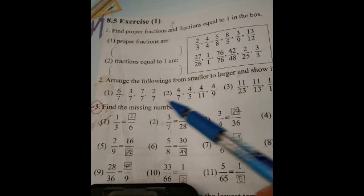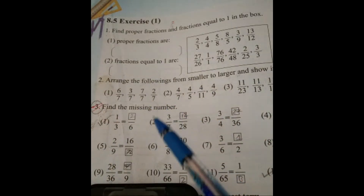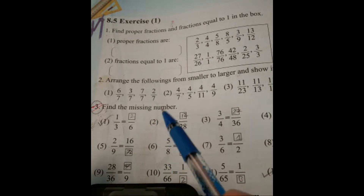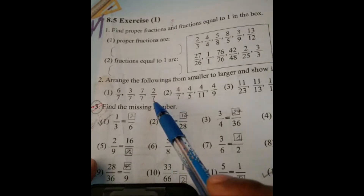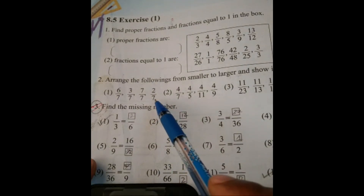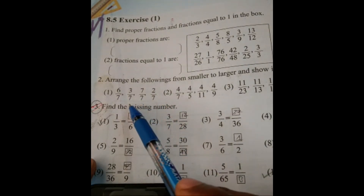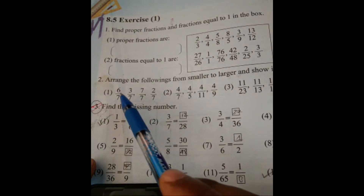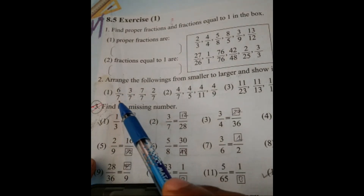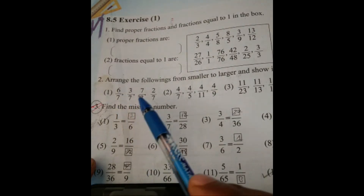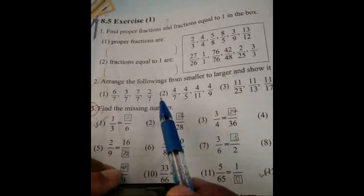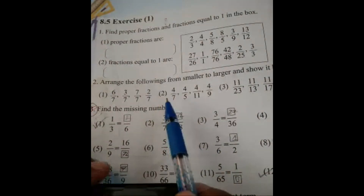For number 1, the smallest fraction first: 2 by 7, and then 3 by 7, next 6 by 7, next 7 by 7. Very good. Now go to number 2.